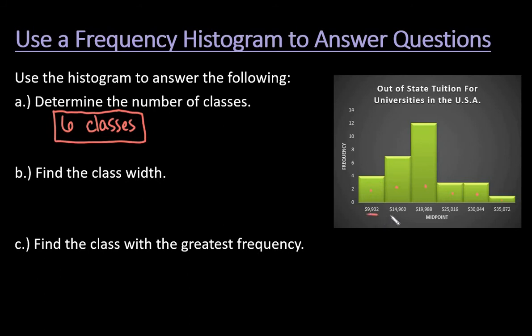Since they gave us the midpoints, you can pick any of the consecutive midpoints. If I wanted to just start with the first two, I could do 14,960 minus 9,932.